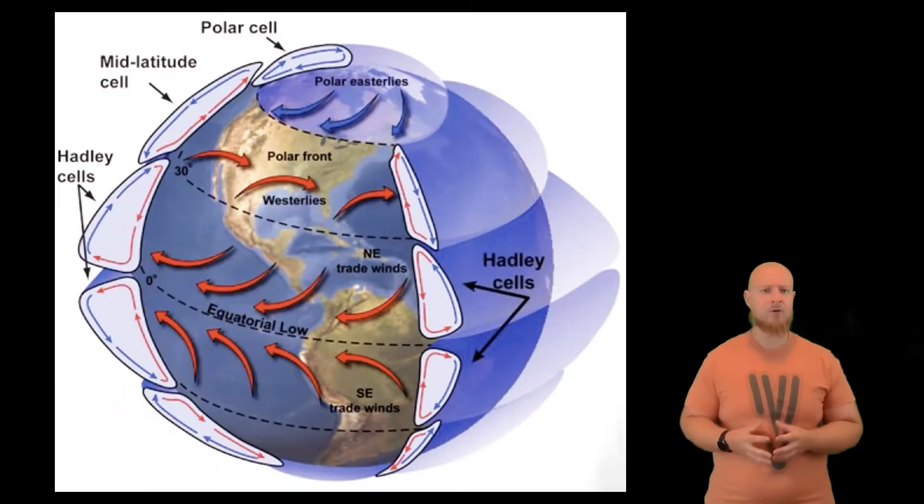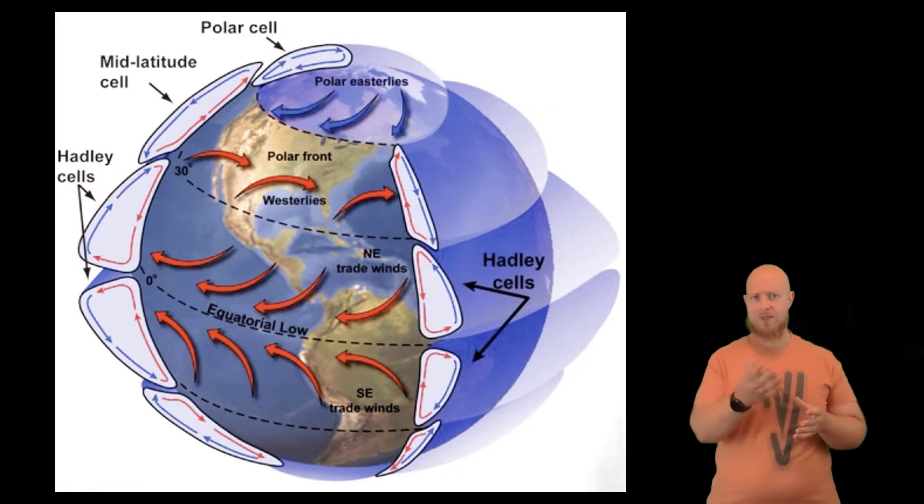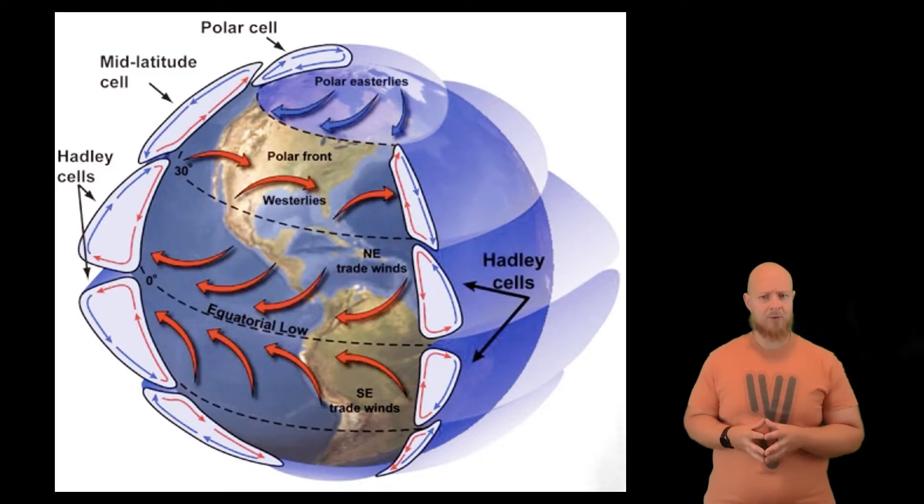There are three major global air circulation patterns: the Hadley cells, the mid-latitude cells - those are sometimes also called the ferrel cells - and the polar cells. Let's go ahead and start with the Hadley cells along the equator.